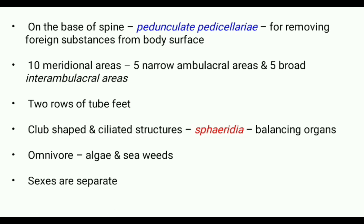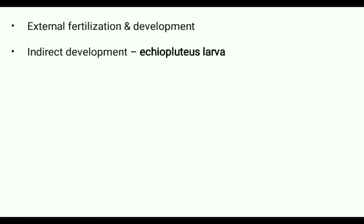The sea urchin is an omnivore that mainly feeds on algae and seaweeds with the help of its masticatory apparatus, Aristotle's lantern. The sexes are separate. Fertilization and development are external. The development is indirect with an Echinopluteus larva.